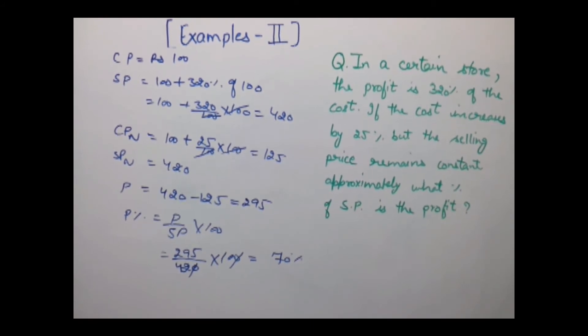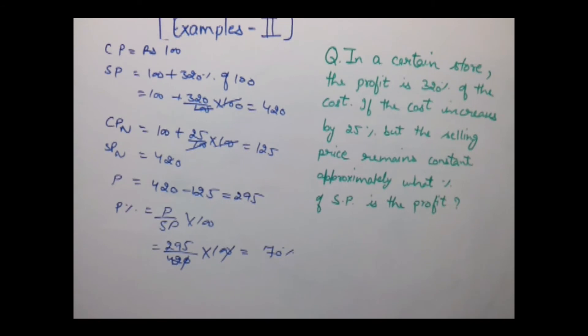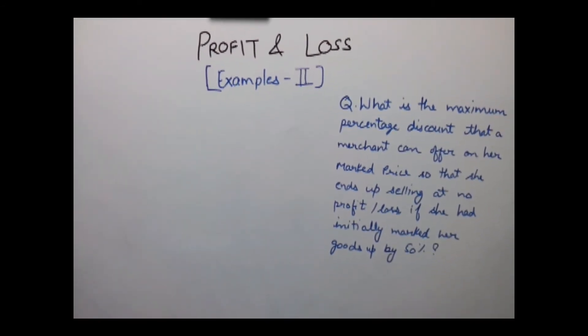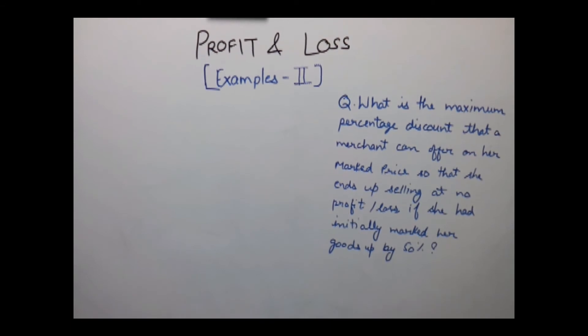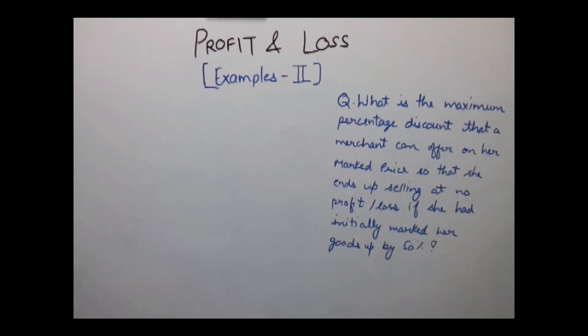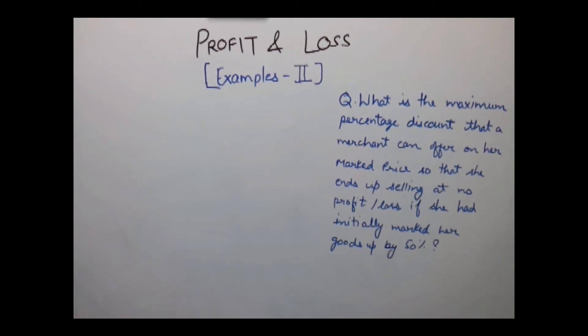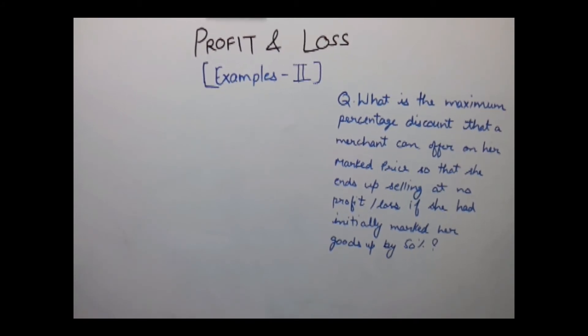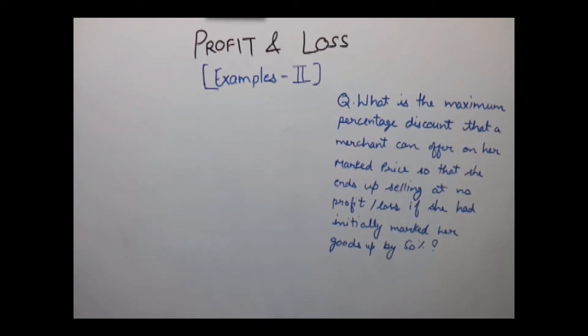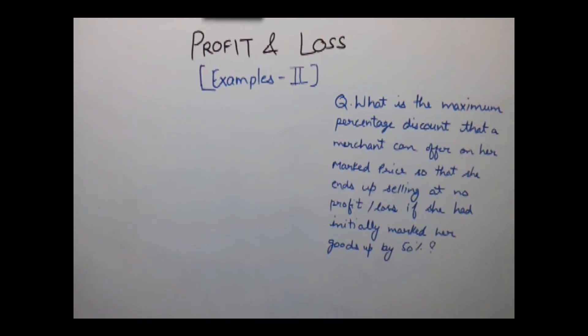Let's solve one more example. Another example is: what is the maximum percentage discount that a merchant can offer on her marked price so that she ends up selling at no profit or loss if she had initially marked her goods up by 50%?